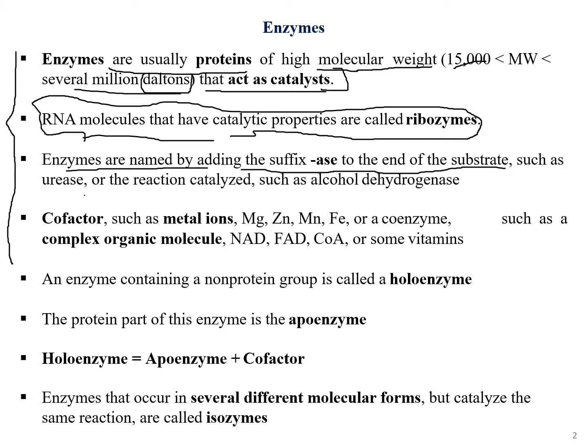Enzymes are named by adding the suffix '-ase' to the end of the substrate, such as urease, or to the reaction catalyzed, such as alcohol dehydrogenase. Whenever we name an enzyme, we add the suffix '-ase'.